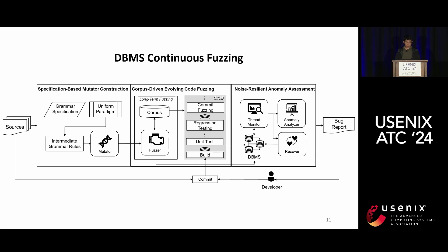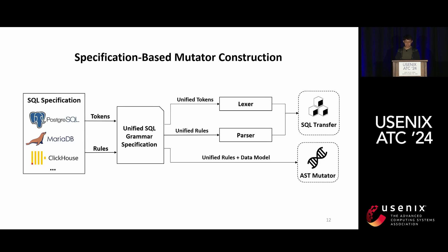To overcome these obstacles, we propose WinFuzz. In step one, to handle diverse SQL grammar, WinFuzz constructs the query mutator from the grammar specification of the target DBMS. In step two, to address the evolving codebase, WinFuzz continuously fuzzes the latest version, accumulating a corpus to perform rapid commit fuzzing on code affected by version changes. In step three, to isolate anomaly analysis, WinFuzz isolates the execution of test cases and directly captures anomaly signals.